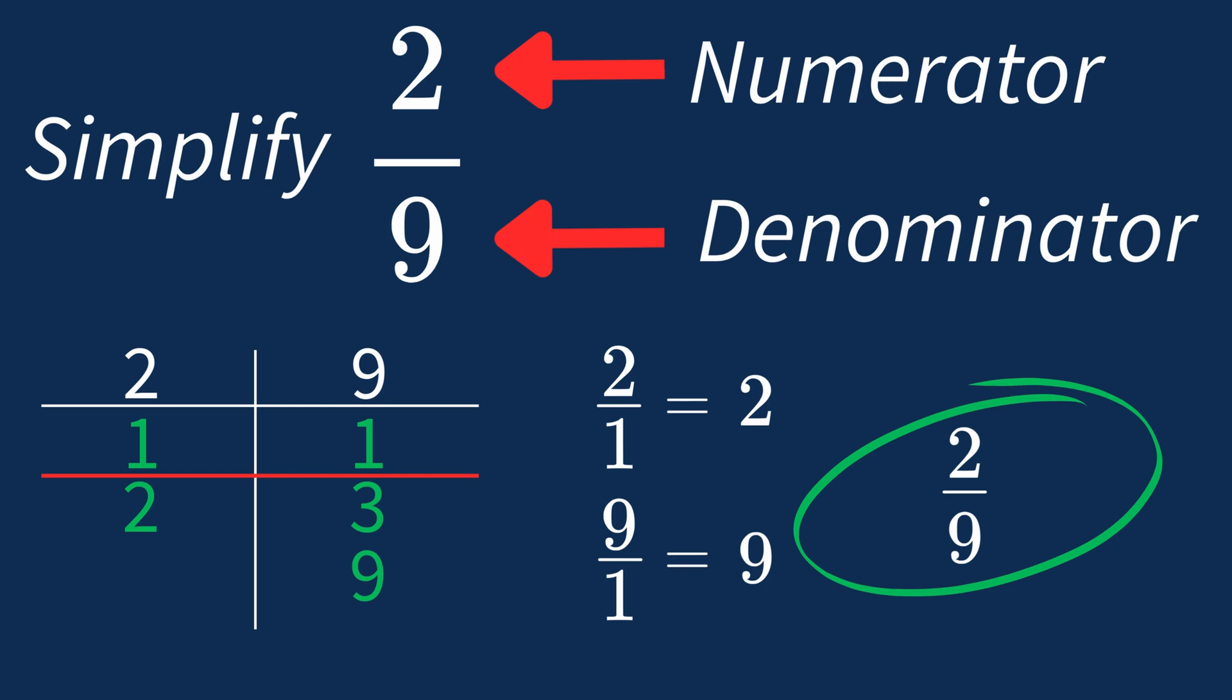In future, if the greatest common factor is 1, you know that fraction is already in its simplest form.